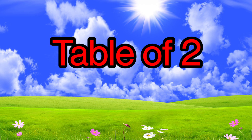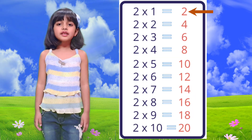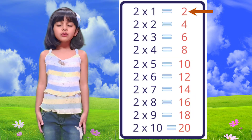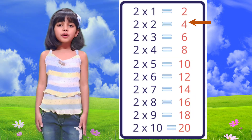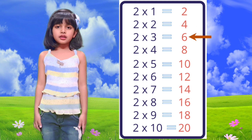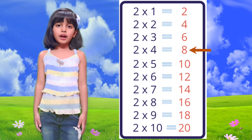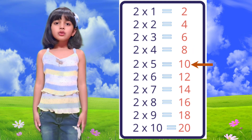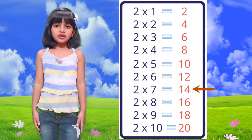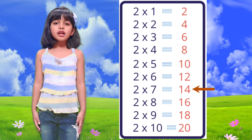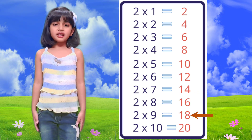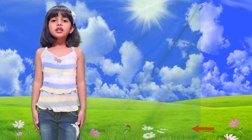Now, table of 2. 2 1 is 2, 2 2 is 4, 2 3 is 6, 2 4 is 8, 2 5 is 10, 2 6 is 12, 2 7 is 14, 2 8 is 16, 2 9 is 18, 2 10 is 20.